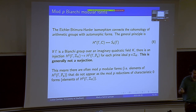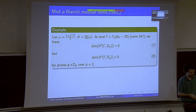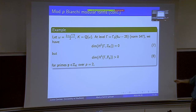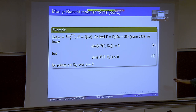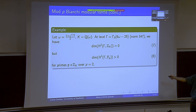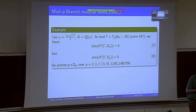This means there are often mod P modular forms — things that appear in H^1(gamma, F_p) that do not appear as the mod P reduction of something in characteristic zero. These mod P modular forms are very mysterious. Here's an example: I've taken the imaginary quadratic field of discriminant minus seven, and taken a level whose cuspidal cohomology vanishes in characteristic zero. But if we go to F_p coefficients for some primes, we get nonzero classes. The primes for which this occurs are p = 2, 3, 7, 13, 37, 1193, and 1,481,759.